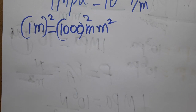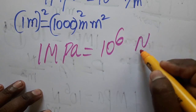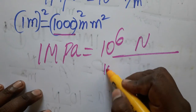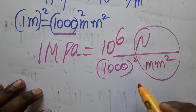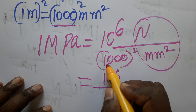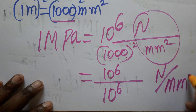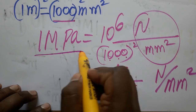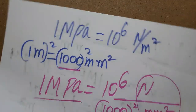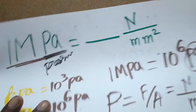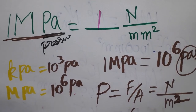So one mega pascal equals 10 power 6 Newton divided by 1000 squared millimeter square. That is 10 power 6 Newton divided by 10 power 6 millimeter square. The 10 power 6 cancels, giving us 1 Newton per millimeter square. So one mega pascal equals 1 Newton per millimeter square. Thank you — if you like my channel, please subscribe.